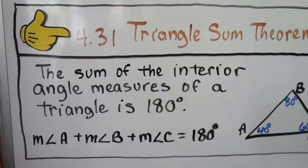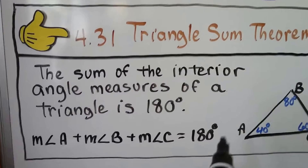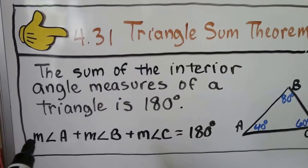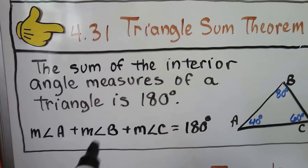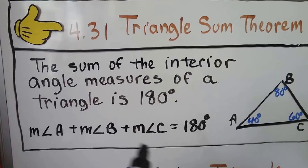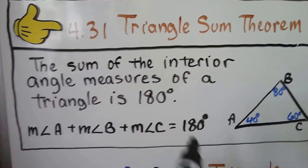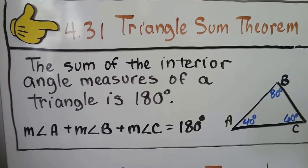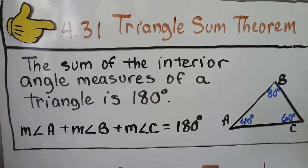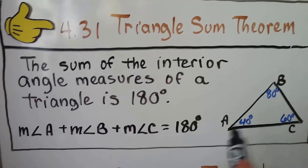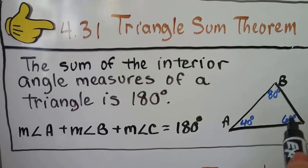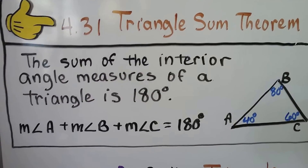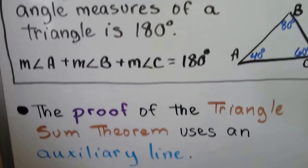We have this triangle with vertices A, B, and C. If we add the measure of angle A plus the measure of angle B plus the measure of angle C, it will total 180 degrees. If we add 40 and 60, that's 100, plus the 80 is 180. That's true for all triangles.